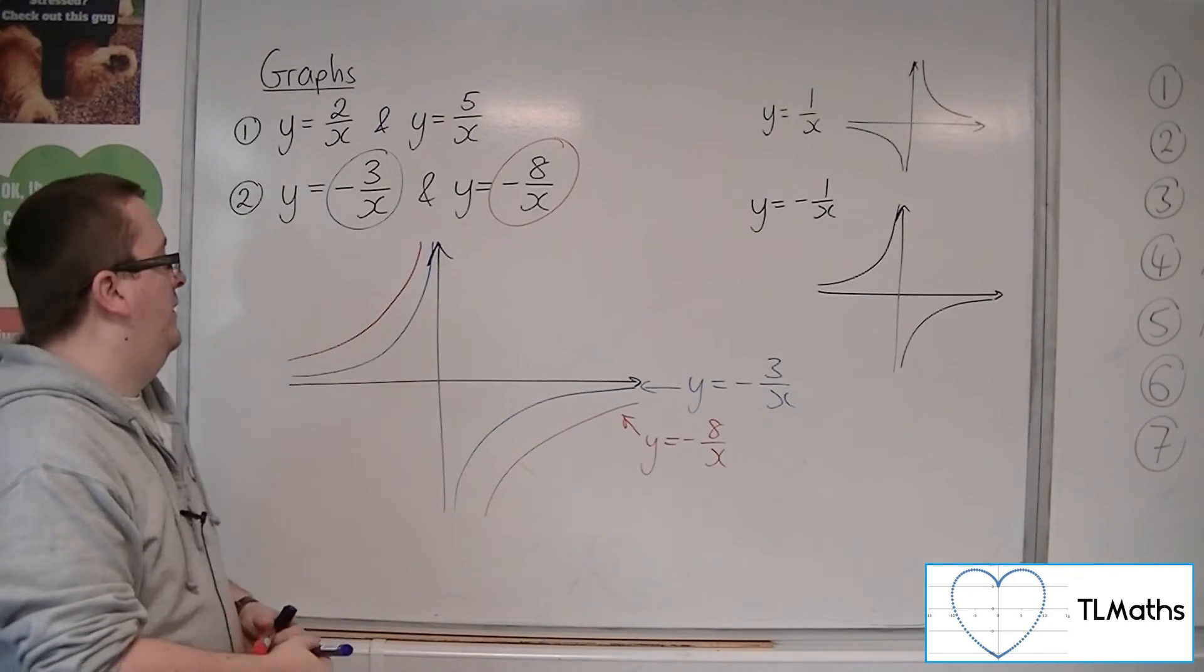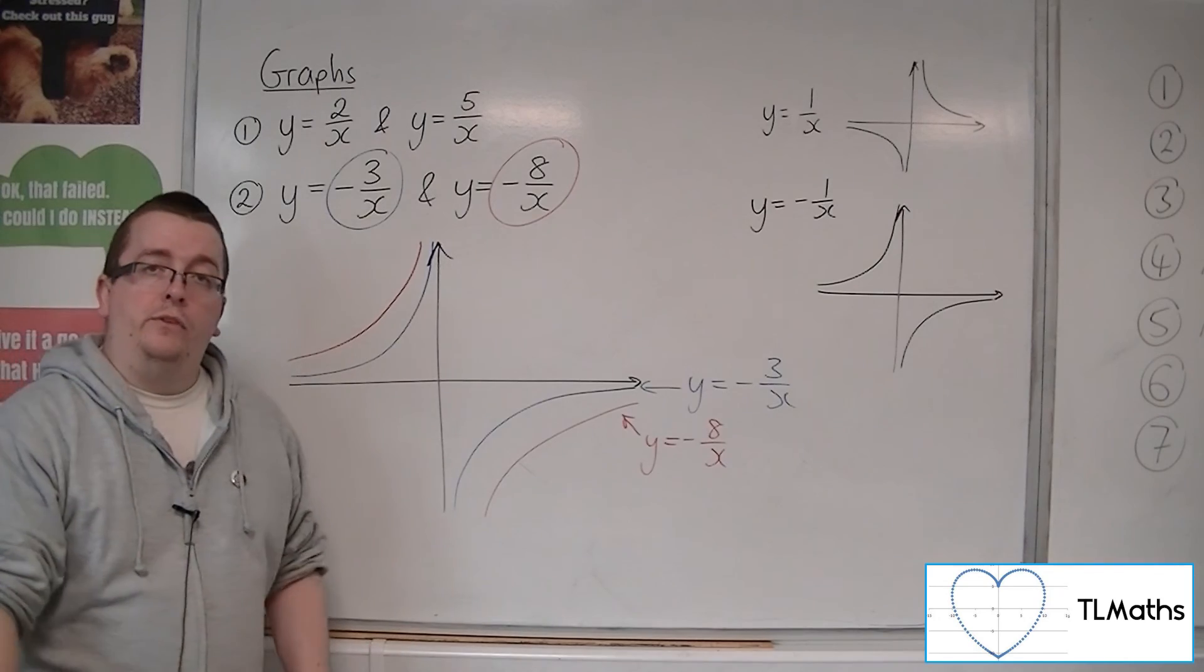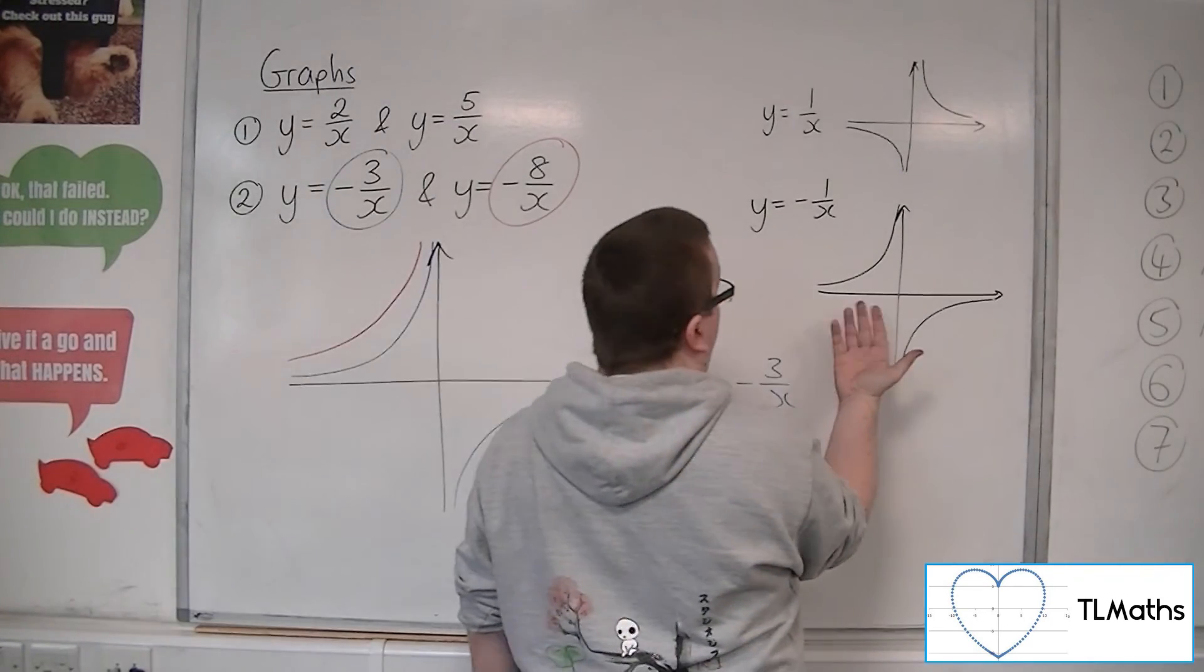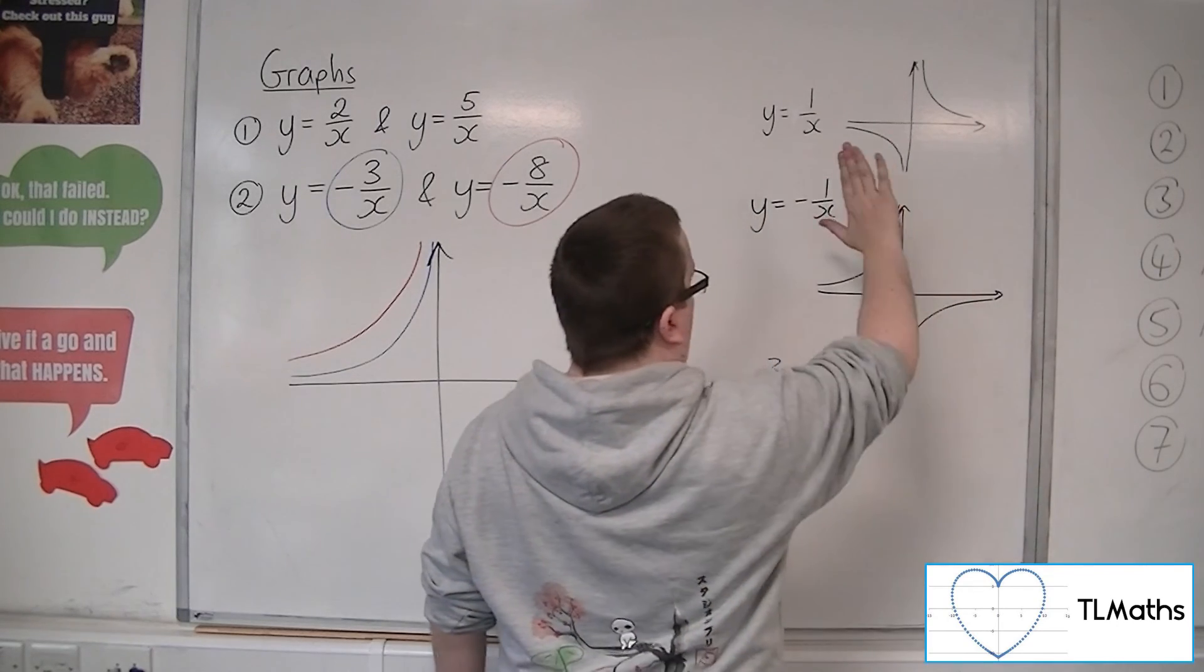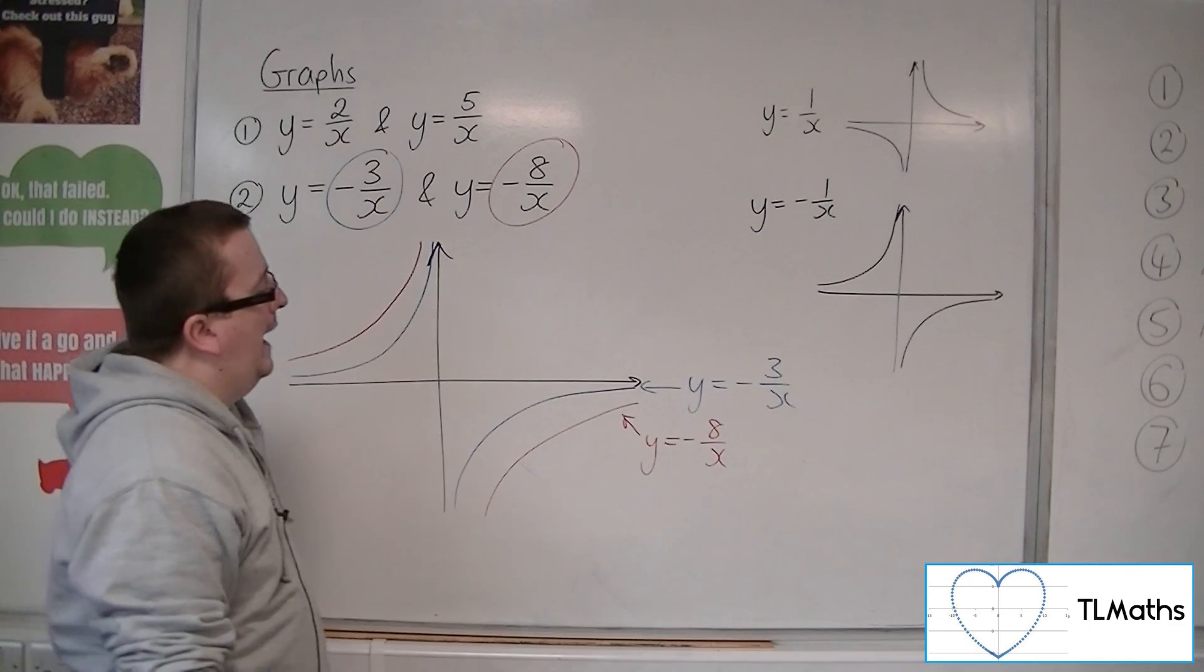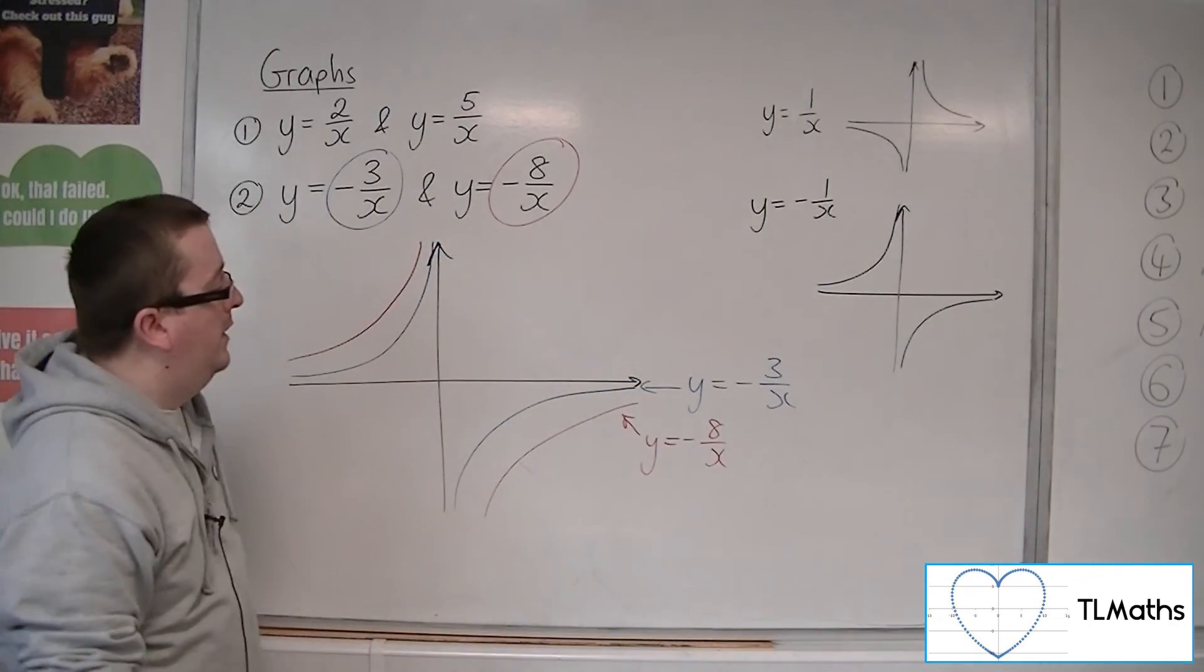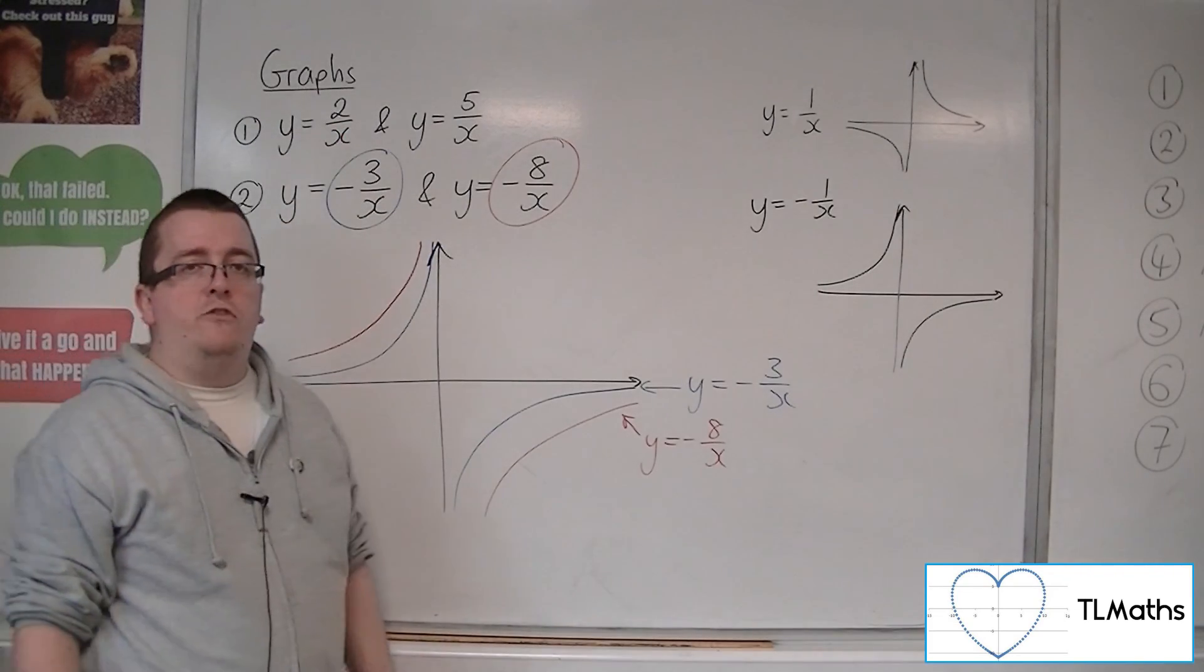Okay? And that's how we can sketch these reciprocal graphs. So the minus sign, what that's telling us, what the minus sign does, it effectively reflects the graph in the x-axis. But you could also see it as reflecting it in the y-axis. They will be both equivalent in this case. And then the number that is in the numerator, the larger it is, the further the graph will be pulled away from the x-axis.